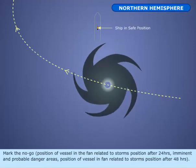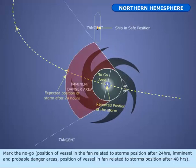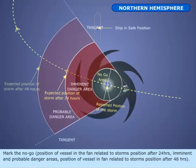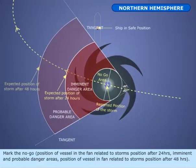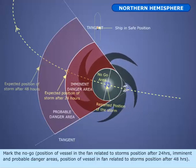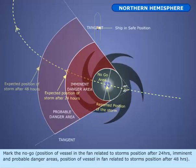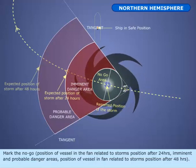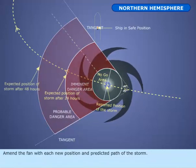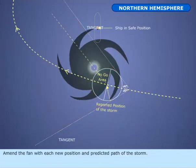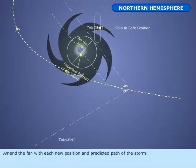Mark the no-go area. Position a vessel in the fan related to the storm's position after 24 hours, identifying imminent and probable danger areas. Position a vessel in the fan related to the storm's position after 48 hours. Amend the fan with each new position and predicted path of the storm.